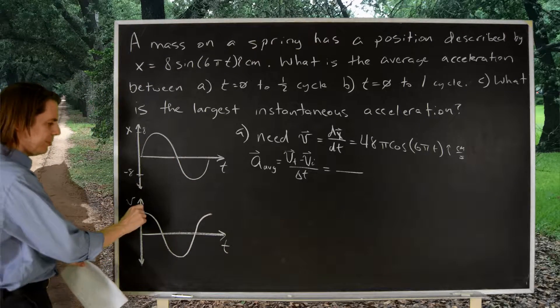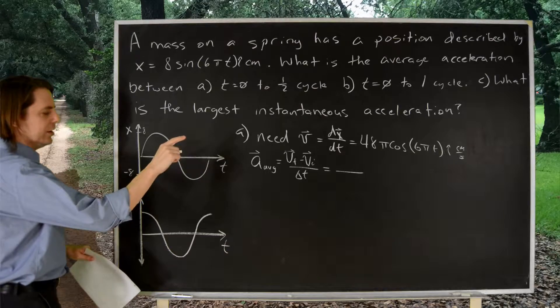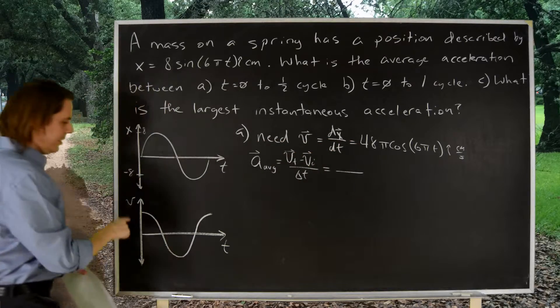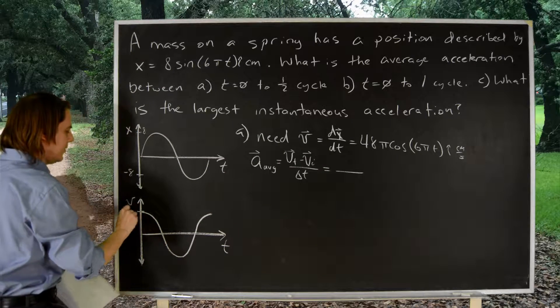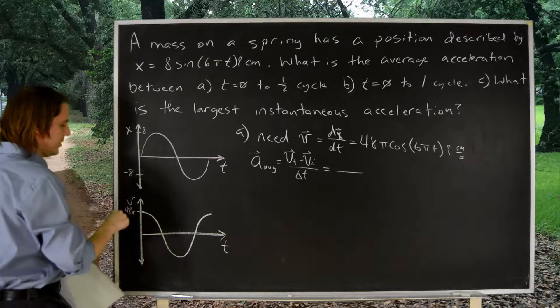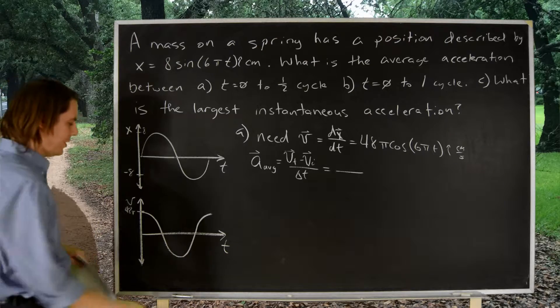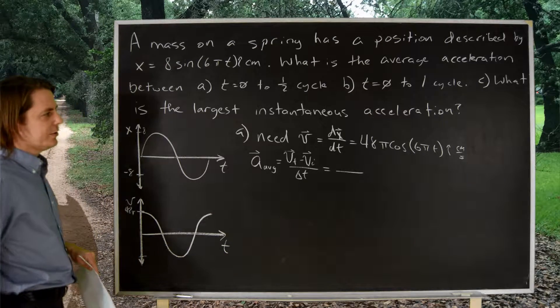Here is a velocity plot now. You can see the velocity is a cosine function. That's what I've plotted here. You know the amplitude is 48 pi. So, that would be 48 pi. We're in centimeters per second. And that would be negative 48 pi down there.